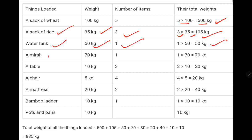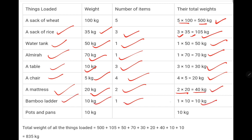Almira 70 kg, 1 almira is 70 kg. Table 10 kg, 3 tables equal 30 kg. Chair 5 kg, 4 chairs equal 20 kg. Mattress 20 kg, 2 mattresses equal 40 kg. Bamboo ladder 10 kg, 1 ladder is 10 kg. Pots and pans total 10 kg.